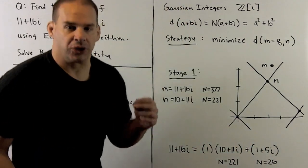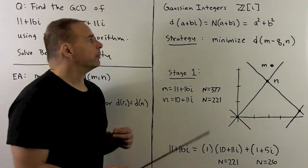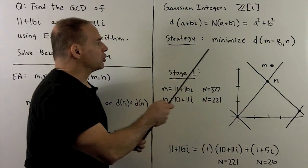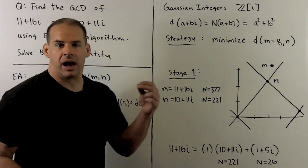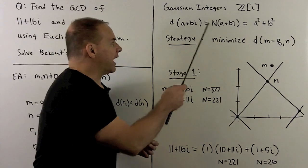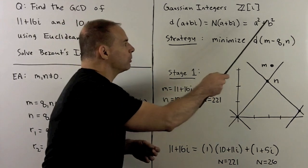Now, in our special case, the Gaussian integers, the d function we also call by capital N. That's going to be given by modulus squared in the complex numbers. So we have N of a plus bi equals a squared plus b squared.